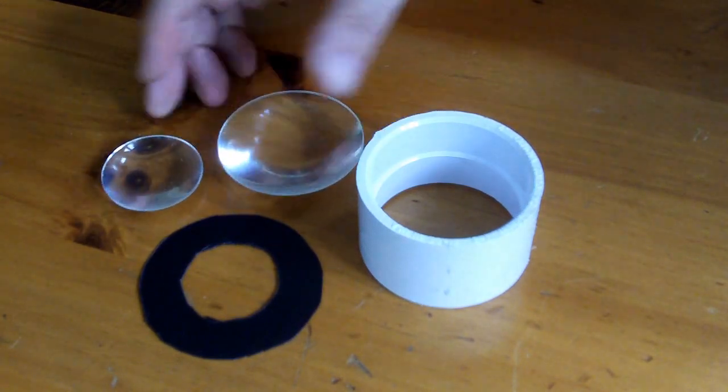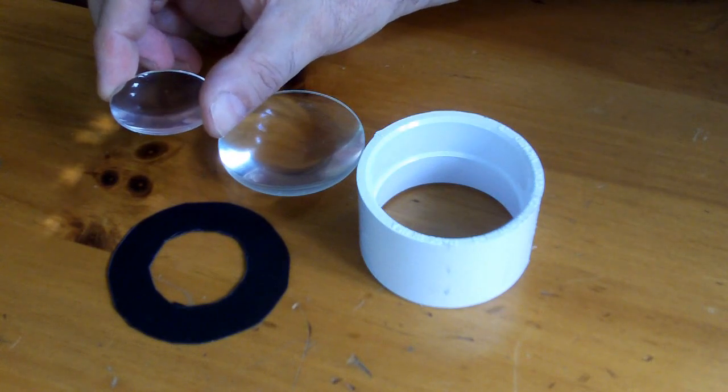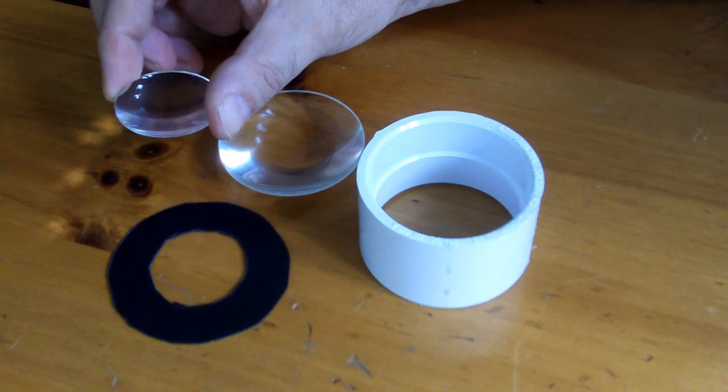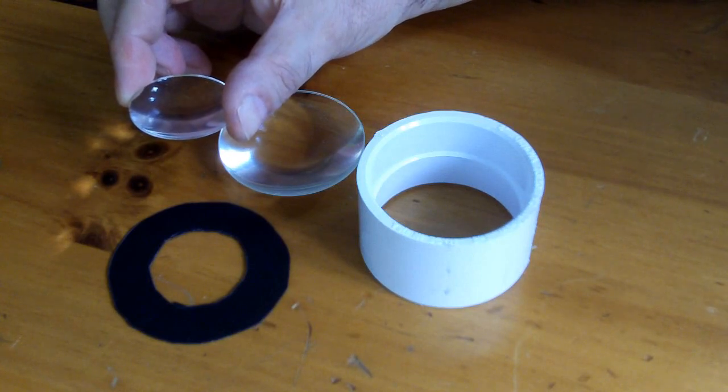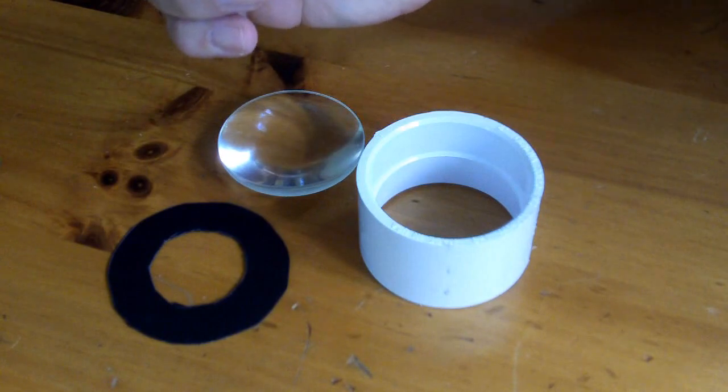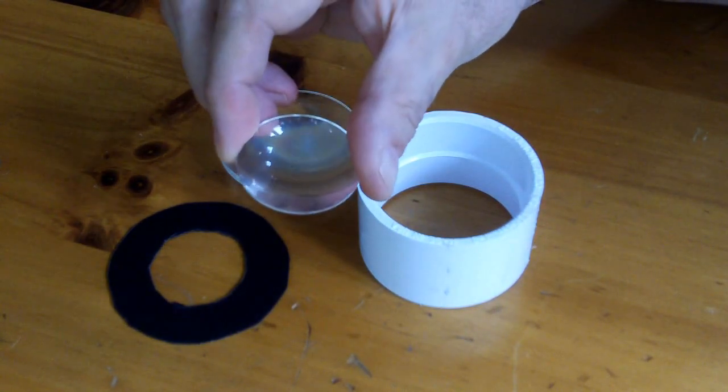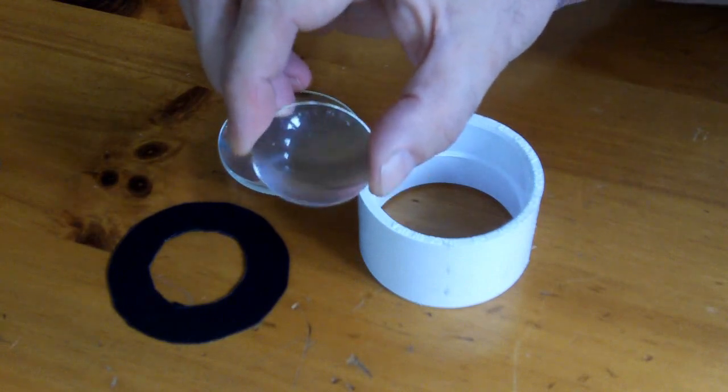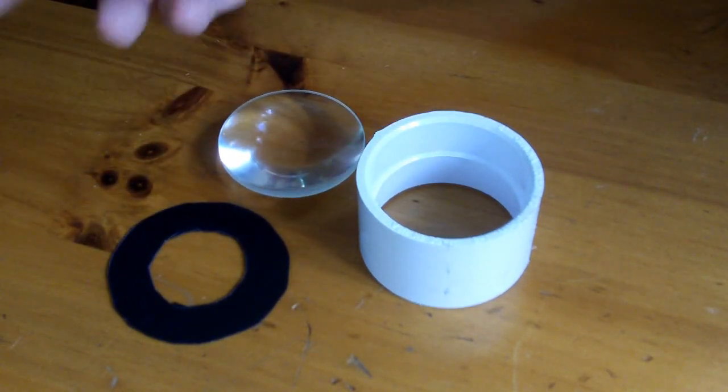The second lens, which is our eyepiece, is a plano-convex, 42.5 millimeter diameter, 77 millimeter focal length. And again, if you'll notice, the bottom is nice and rounded bulgy, and the top is flat. That flat top is going to go in front of our eye, and the bulgy part is going to face towards what we're looking at.